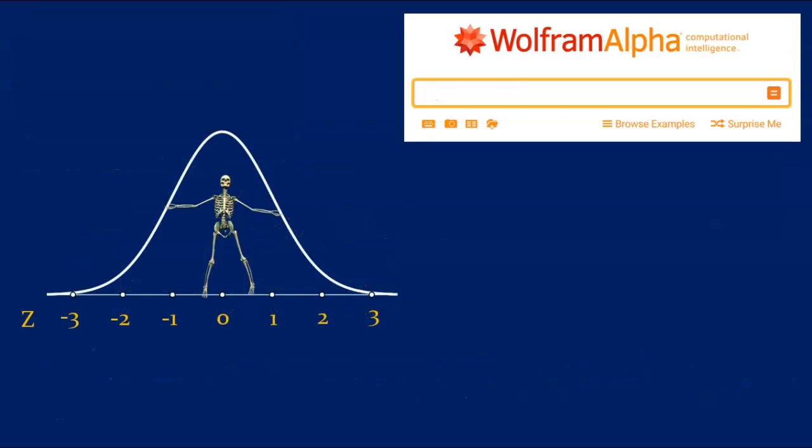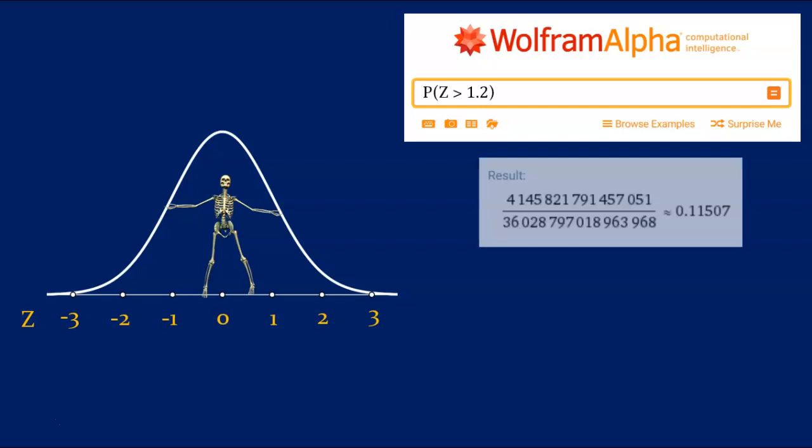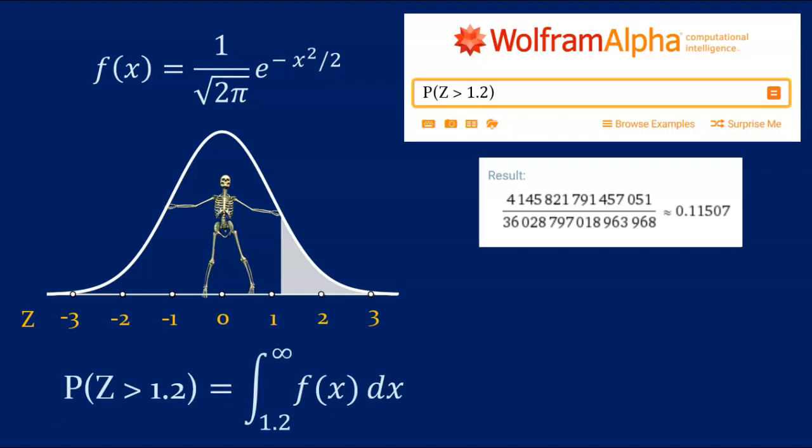When you ask Wolfram Alpha, or a z-table for that matter, a question about the z-distribution, you might wonder where the answer actually comes from. Probabilities correspond to areas under the z-curve. That z-curve is the graph of a particular mathematical function. And if you've studied a little calculus, you should recognize that we can find that area by integrating the function over the appropriate interval. If you haven't had calculus, don't worry, you do not need it for this course. You also do not have to know the formula for the z-score I've just put on the screen. First, note that it involves pi. Now pi is connected to circles, so what on earth does it have to do with the normal distribution? I'm going to have to just leave that as an unanswered question to tantalize the mathematically inclined.